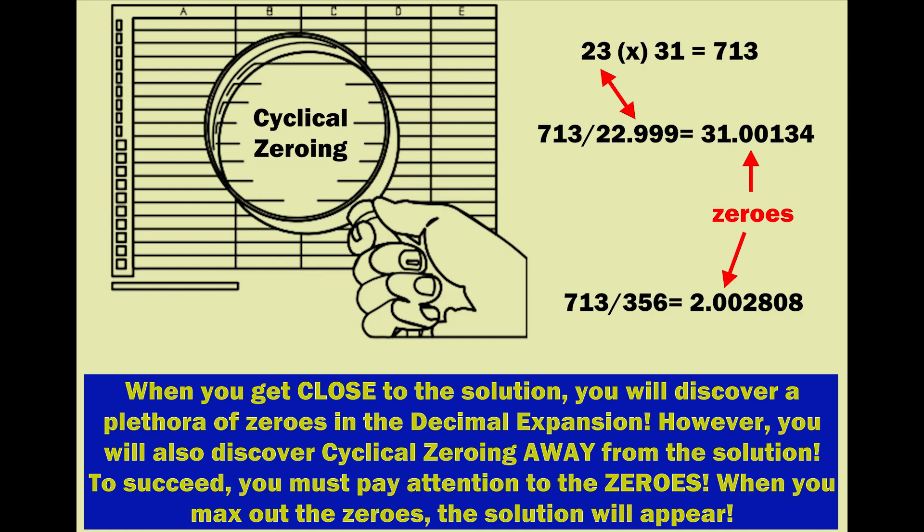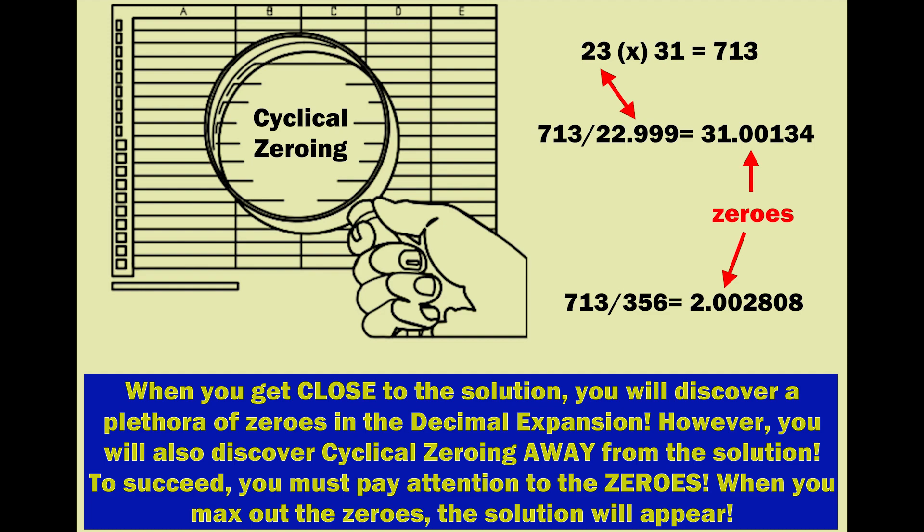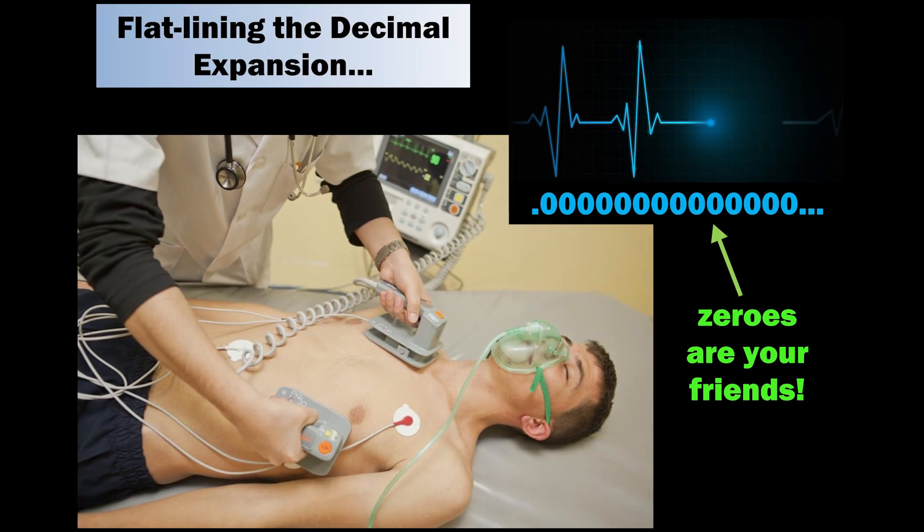When you get close to the solution, you will discover a plethora of zeros in the decimal expansion. However, you will also discover cyclical zeroing away from the solution. To succeed, you must pay attention to the zeros. When you max out the zeros, the solution will appear. In effect, you are flatlining the decimal expansion.